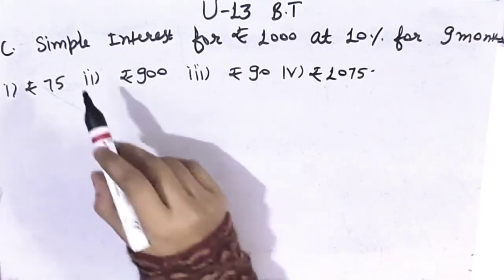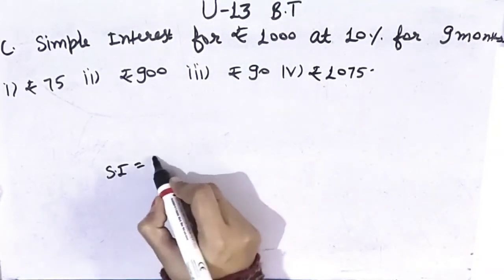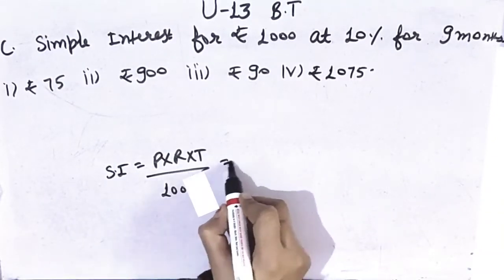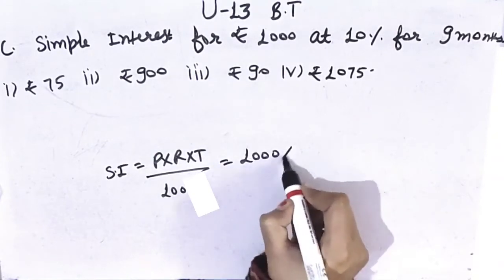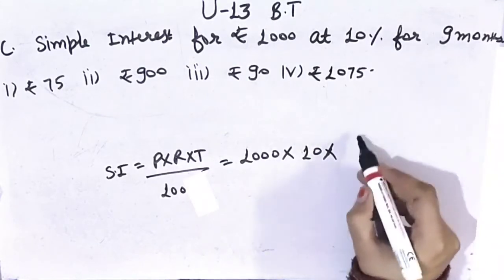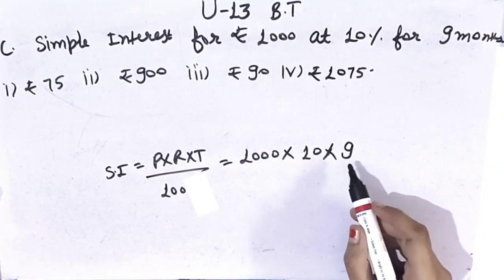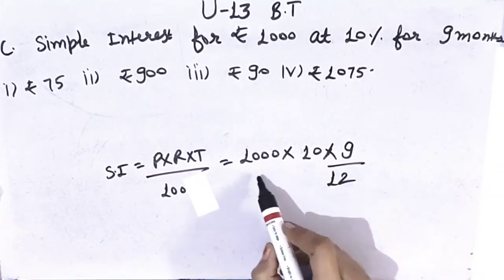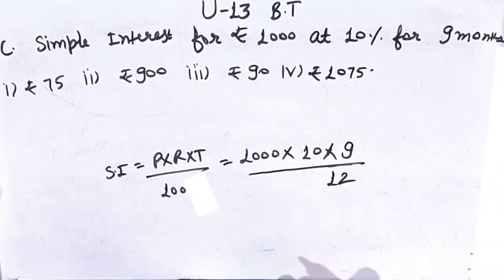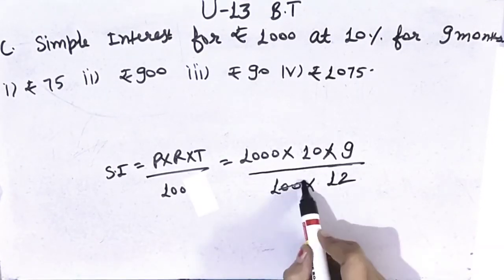Next, part (a): find simple interest for principal Rs.1,000. Simple interest formula is: principal multiply rate of interest multiply time divided by 100. Principal is Rs.1,000, rate of interest is 10%, and time is 9 months. Since time is in months, we convert: 1 year equals 12 months, so time is 9 by 12. Now apply the formula: principal × rate × time ÷ 100, then do cancellation — 100 and 20 cancel.